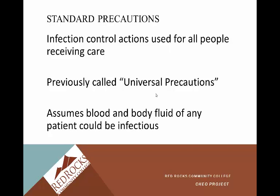Standard precautions — formerly called universal precautions, though the more appropriate term now is standard precautions — are infection control actions used for all people receiving care. The key principle is that you automatically assume, when coming into contact with blood or bodily fluids, that the patient could be infectious. So instead of trying to determine if blood is infectious, you assume any blood or bodily fluid is infectious.